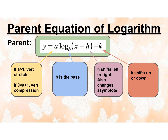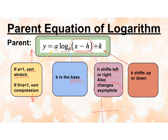When we think about the parent graph, we have the same letters we've been using. We have a: if a is greater than 1, it's going to vertically stretch the graph and pull it up; if it's between 0 and 1, it's going to be vertically compressed and squished down. b is our base. Inside the logarithm with the x, that's going to shift it left or right — and it's also going to change my asymptote, since my asymptote is a vertical x equals line. Then that last plus k is going to shift it up or down, and that's not going to change your asymptote.